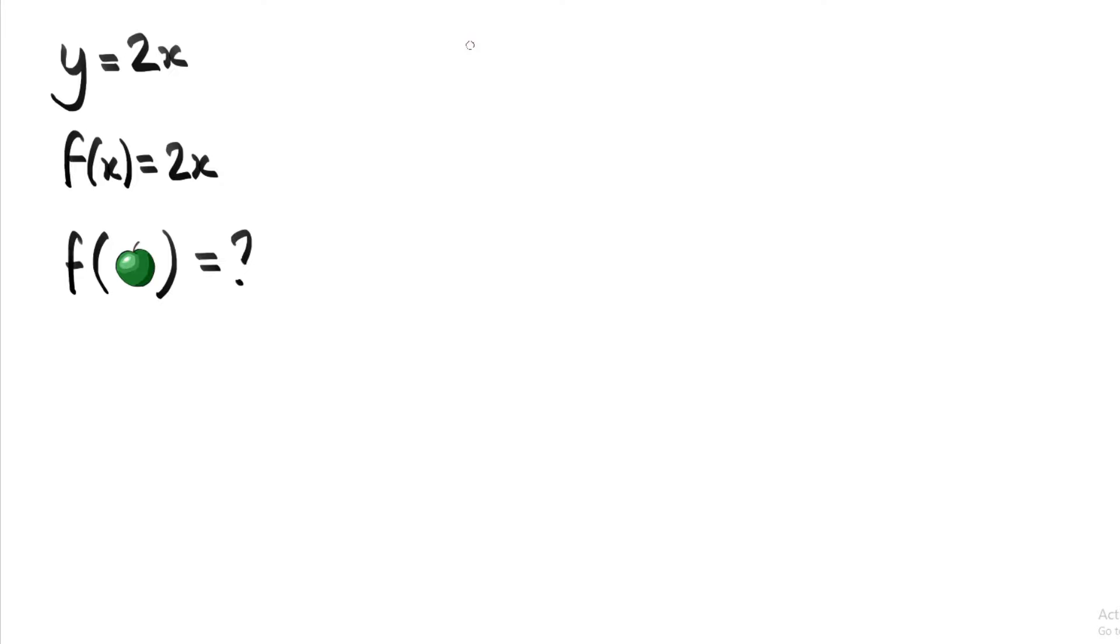When we define a function, we have to say what set the function draws elements from and what set it produces elements for. So we write that a function is going to take objects in set A into objects in set B. And in this way, you can see that a function is defining a relationship between the two sets, between the set A and between the set B.